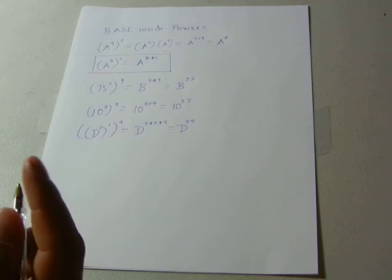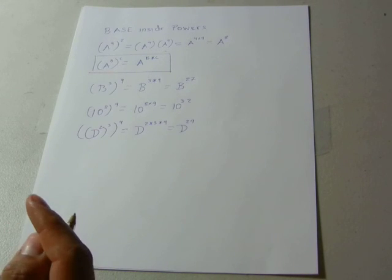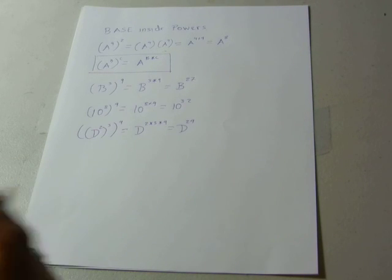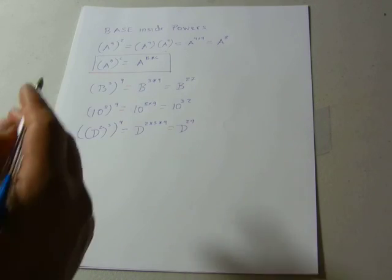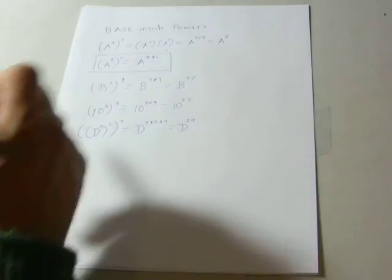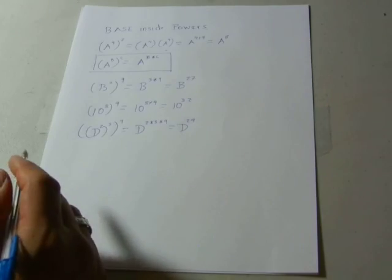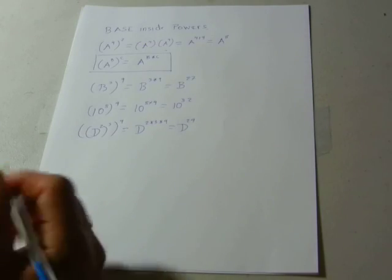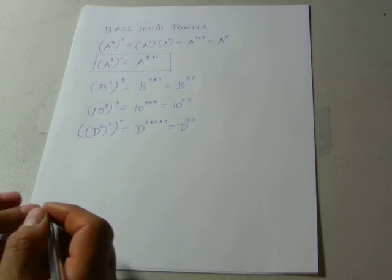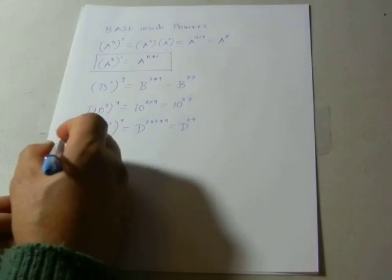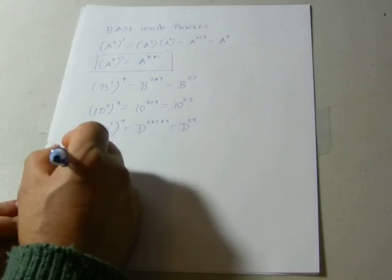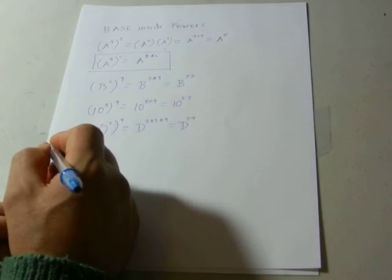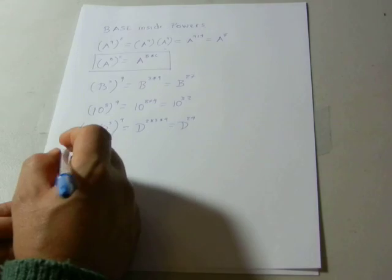To summarize: when we have multiplication with the same base, we add the exponents; when we have a power raised to another power, we multiply the exponents. Now let's see what happens with divisions with the same base.